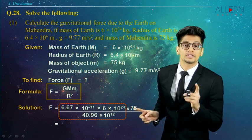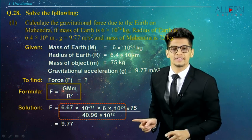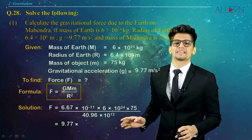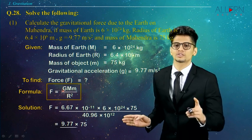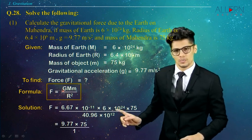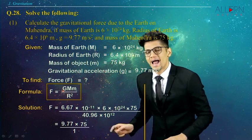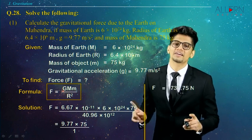So what we have to do is simply 9.77 × 75, and nothing remains in the denominator, so we write upon 1. When you multiply 9.77 and 75, the answer we obtain is 732.75 Newtons.